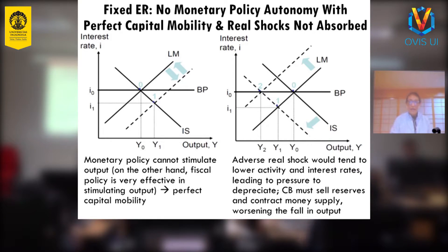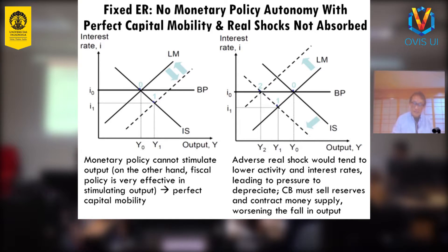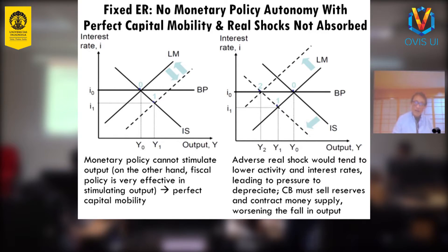Here is the case where there is an adverse shock, and that tends to lower activity. So let's imagine this IS curve originally and then there is a real shock — an adverse real shock. That means the IS curve shifts to the left. According to the IS-LM model, the output will go down from Y0 to Y1.